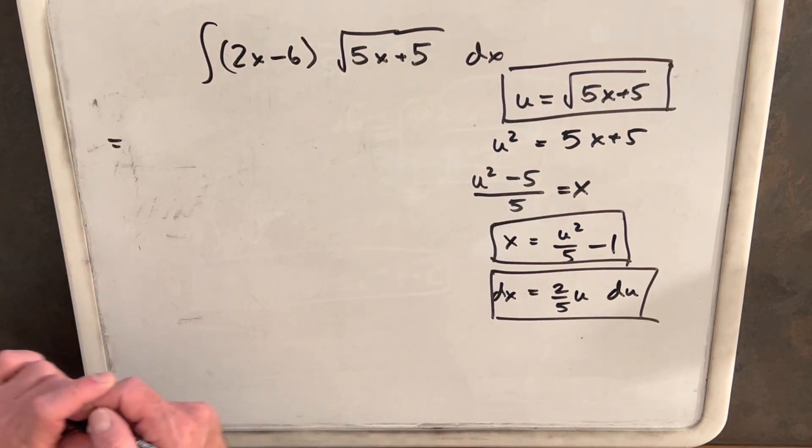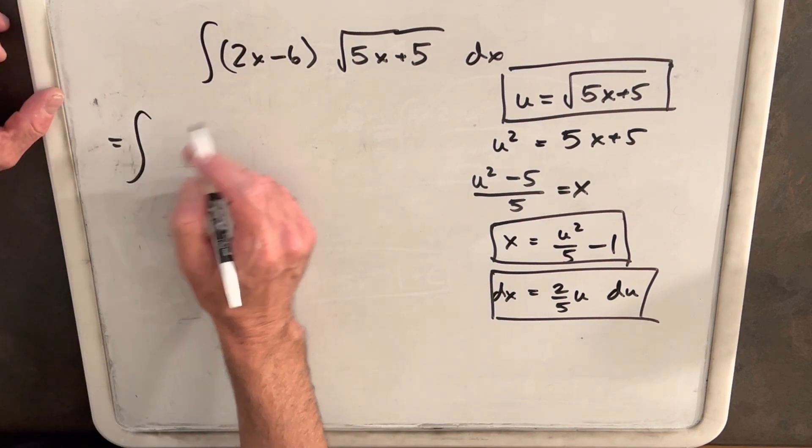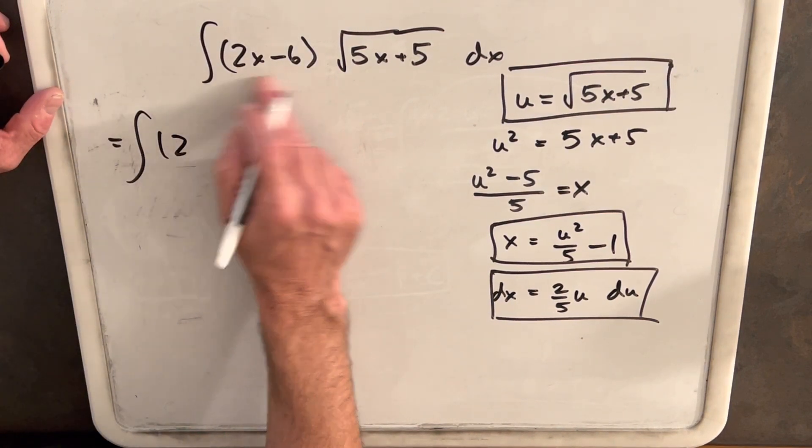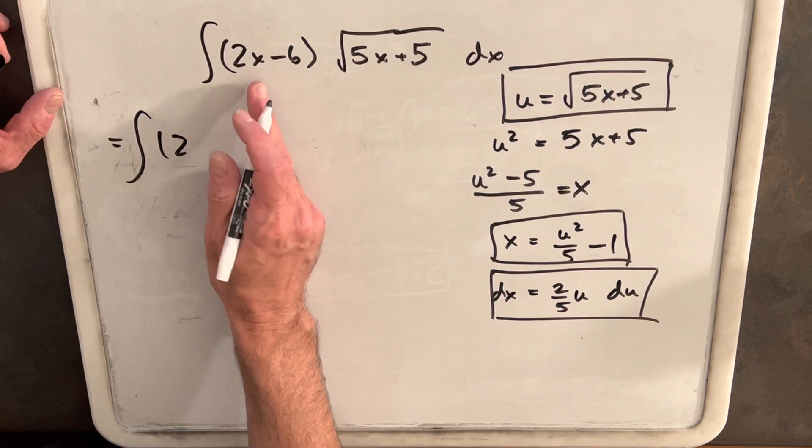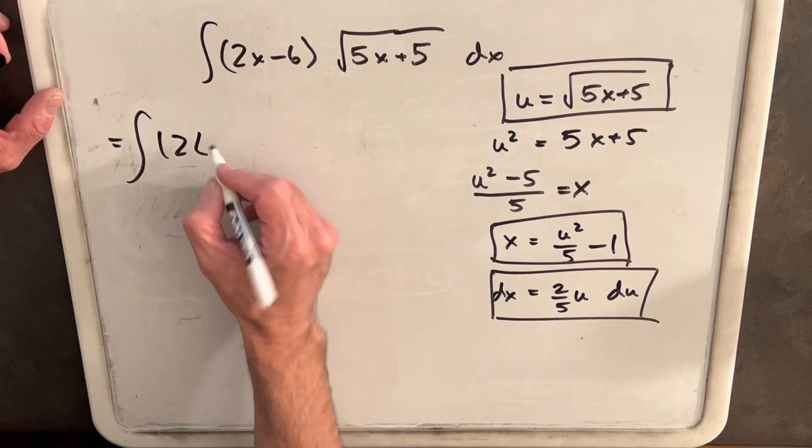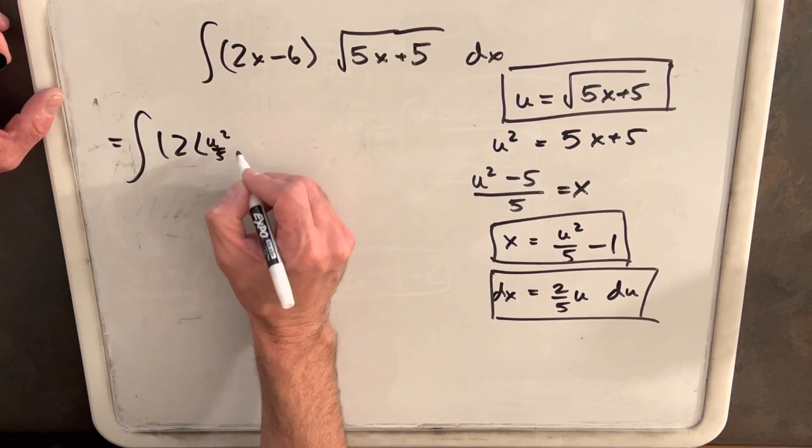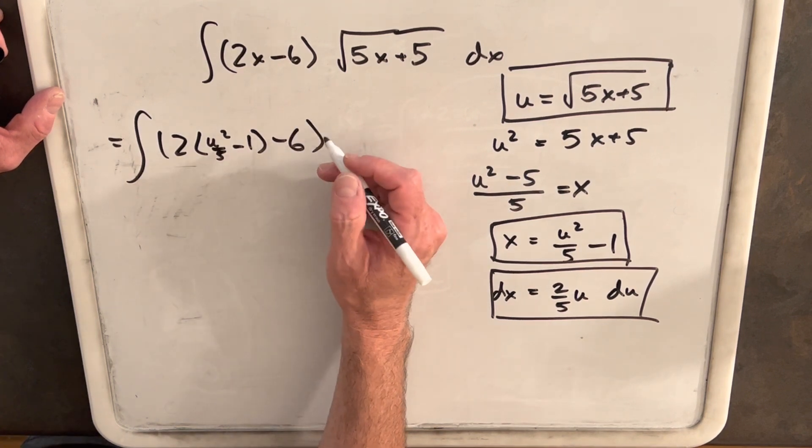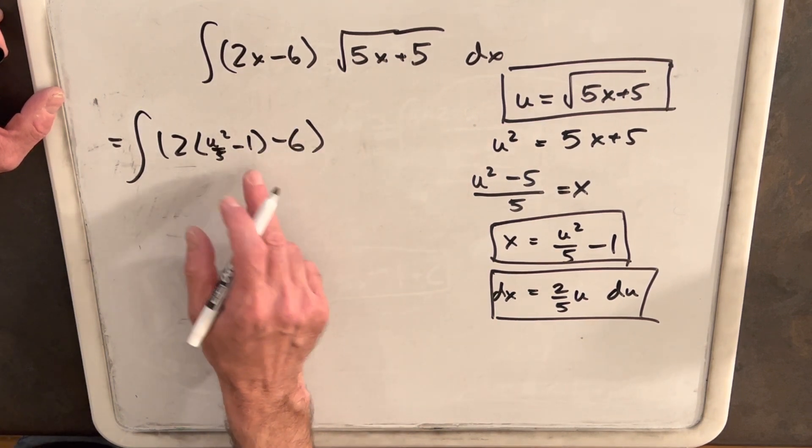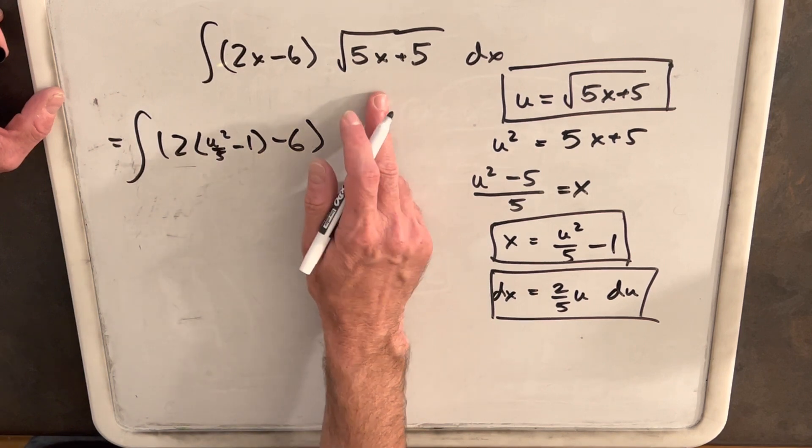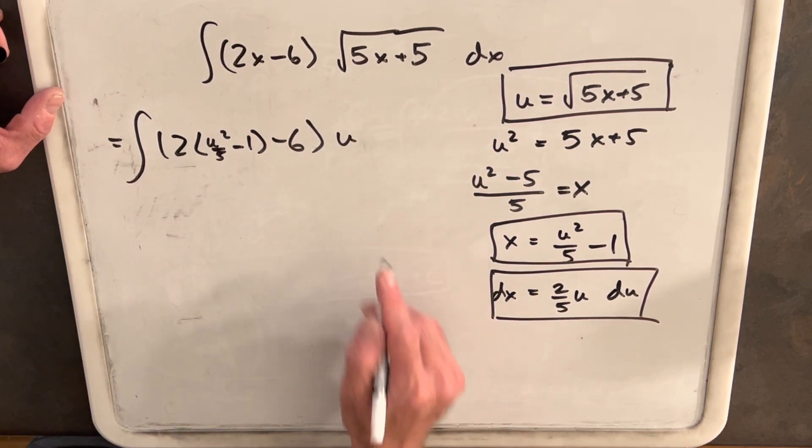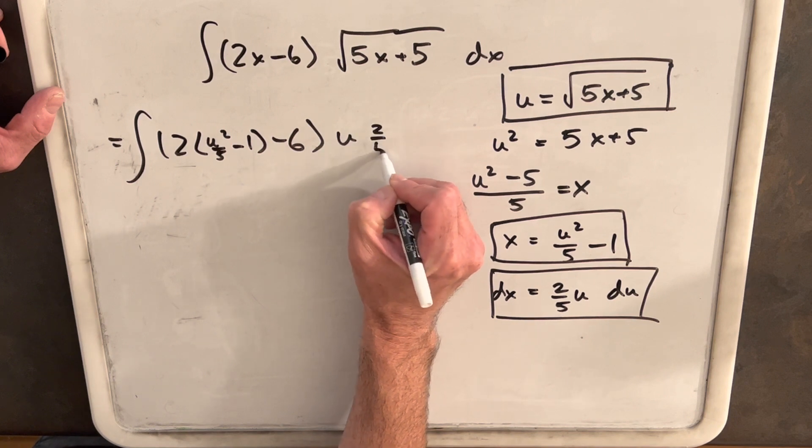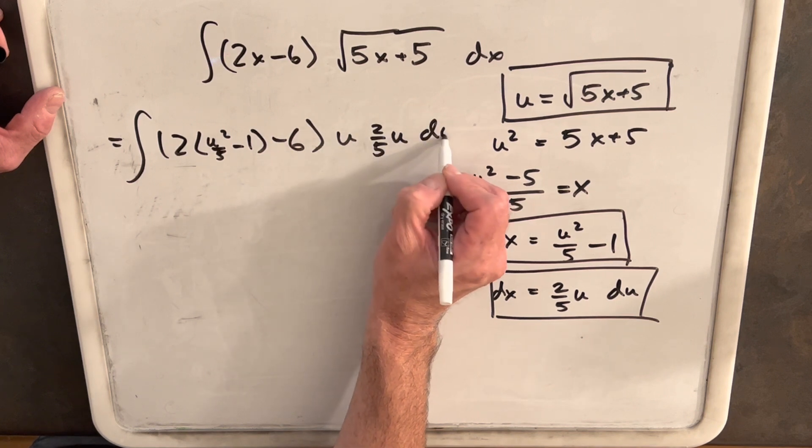Okay, now let's make our substitution and plug all of our values in. So we'll start with this first part. I'm not going to forget the 6 this time. So substituting in for x, we're going to have u squared over 5 minus 1 minus 6. See, I see why I got confused, because there's too many parentheses involved. And then 5x plus 5 is just u. And then dx is going to be 2 fifths u du.